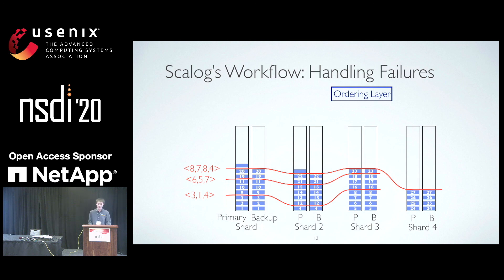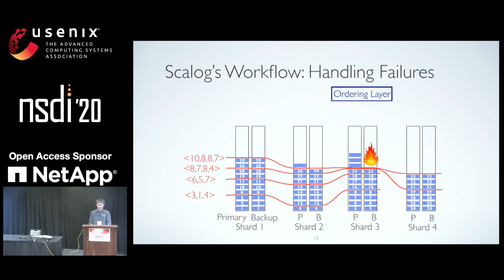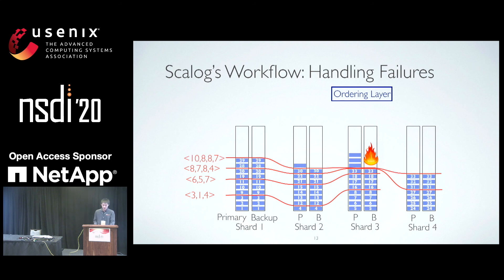Failures are similarly easy to handle. If the backup of shard 3 fails so that the primary of shard 3 is unable to replicate its records, when the ordering layer generates a new cut and doesn't hear from the backup of shard 3, it will use the previous value received from that backup. The new cut naturally excludes records in shard 3 while other shards are not affected. For records stored at the primary but unreplicated, the append operation will timeout and clients will retry to append them to a different shard. Eventually the failure is detected and fixed, but before that, ScaleLog's capacity is decreased because shard 3 is not available for writing — yet the system continues to remain available.